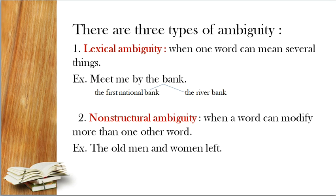Two: non-structural ambiguity — when a word can modify more than one other word. غموض في تركيب الجملة، عندما كلمة تحدد أكثر من كلمة أخرى. مثال: 'The old men and women left.' في هذه الجملة هناك غموض — هل صفة 'old' تخص الرجال فقط، أم الرجال والنساء معاً؟